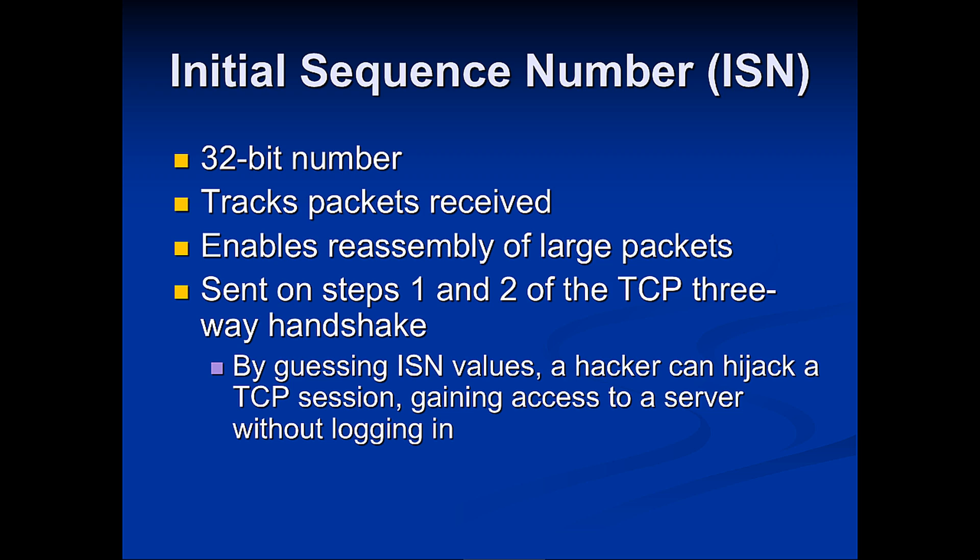The sequence number is a 32-bit number. It tracks packets received and enables reassembly of larger packets. It is sent on the first and second steps of the TCP three-way handshake. By guessing the ISN value, a hacker could hijack a session and gain access without ever actually logging in.